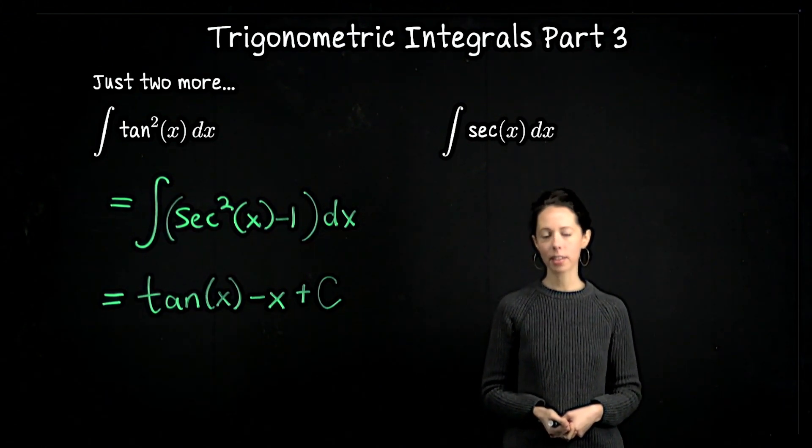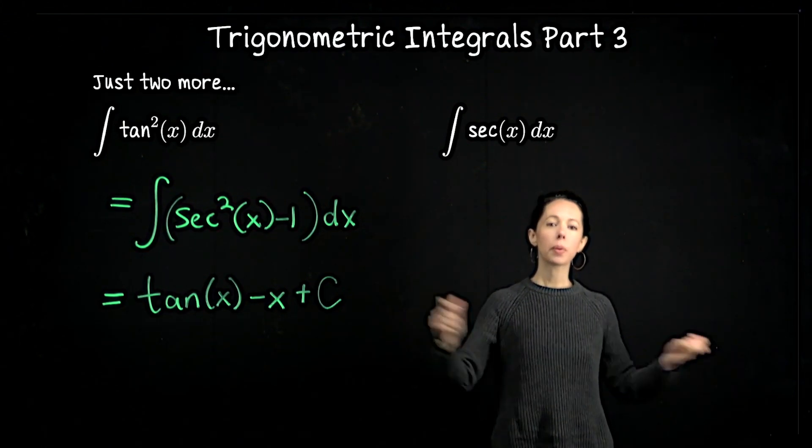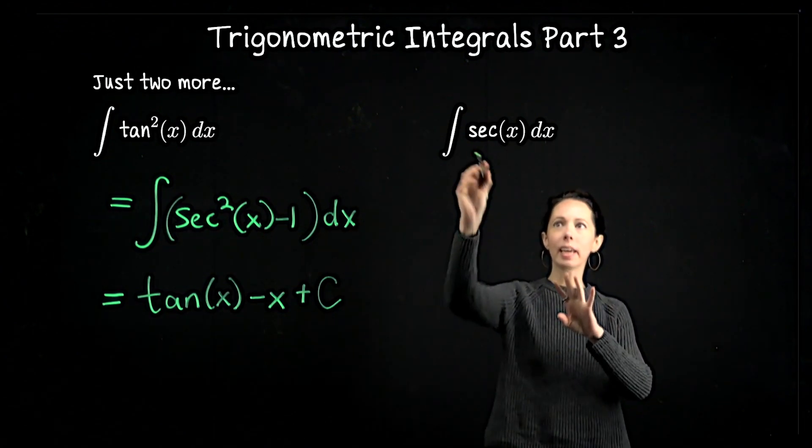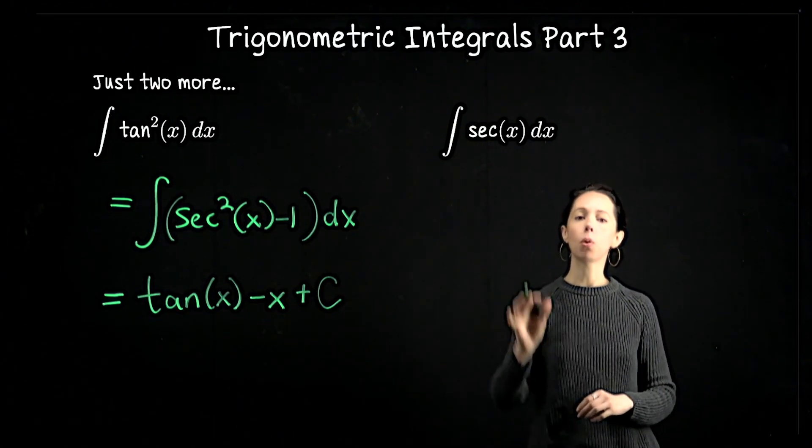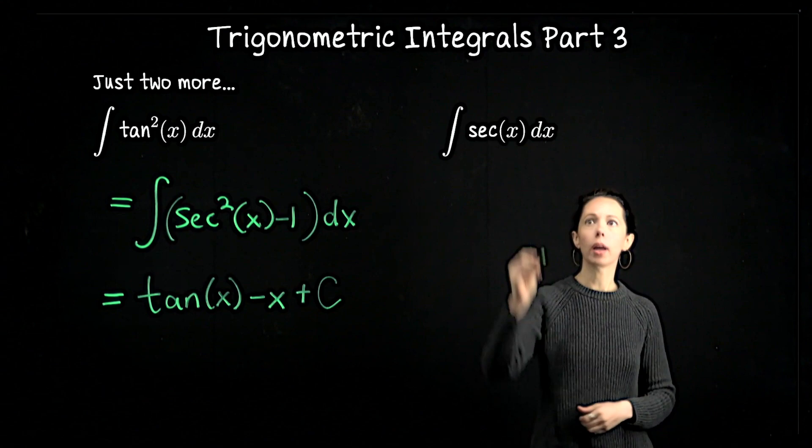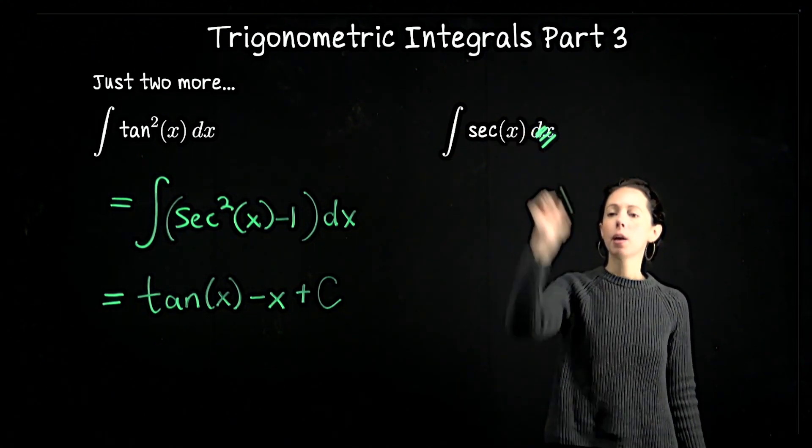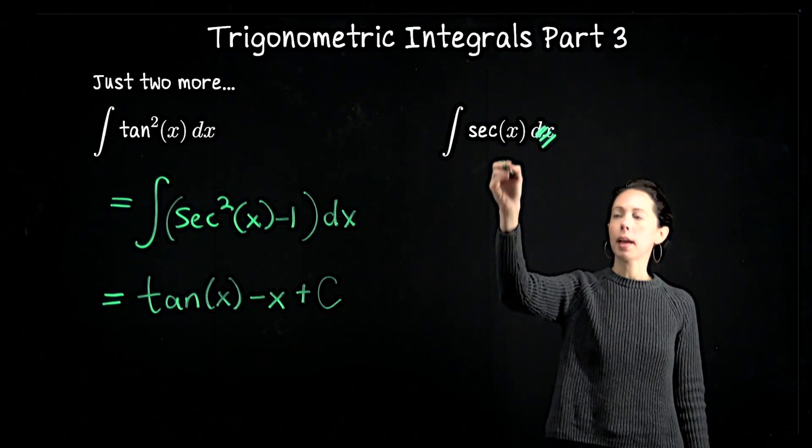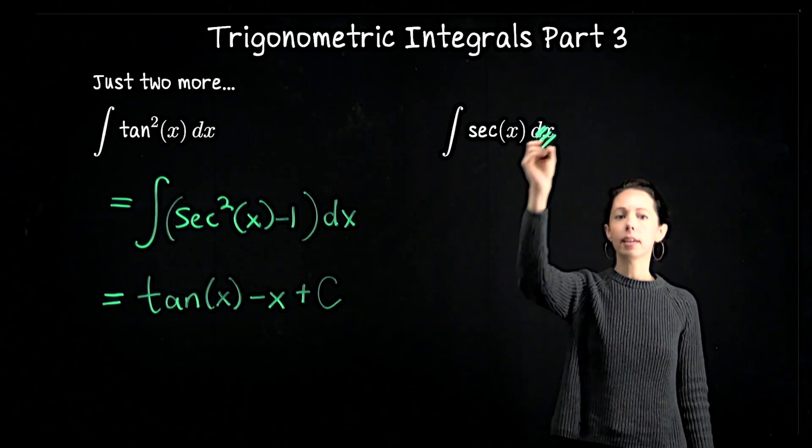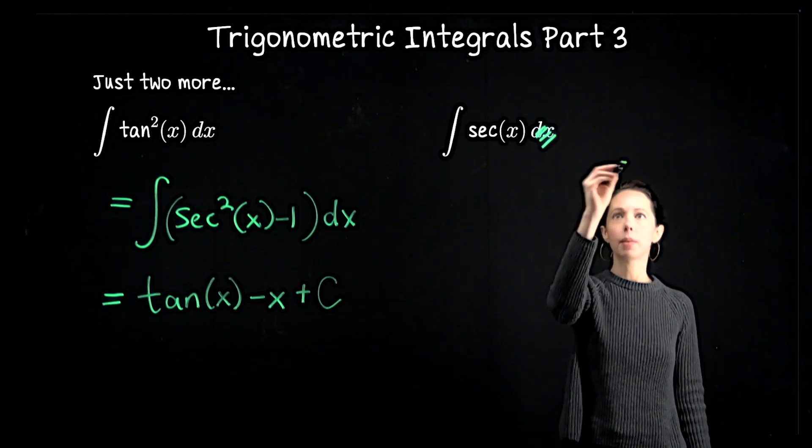Integrating sec(x) requires a little trick. I'm going to take this integrand, sec(x), and multiply it by a fancy version of 1. Let me multiply sec(x) times the quantity [sec(x) + tan(x)] divided by itself.